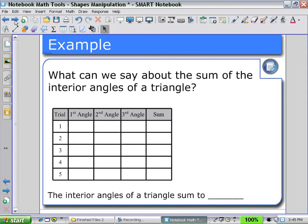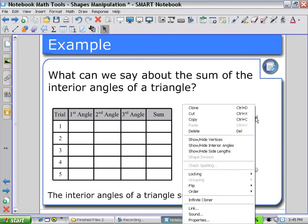Using our irregular polygons tool, we can create a triangle, drawing three vertices, selecting the shape, using the arrow pull down menu, show and hide the interior angles.